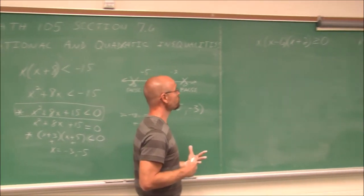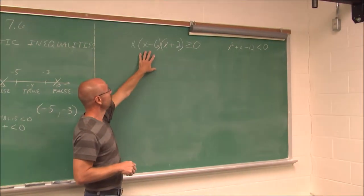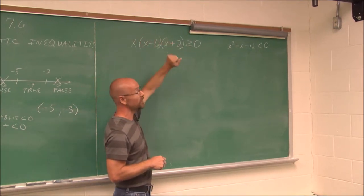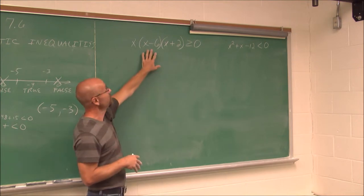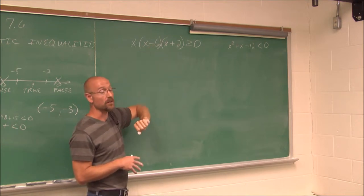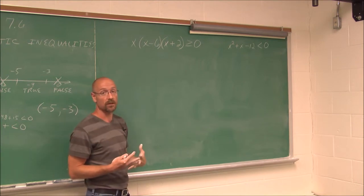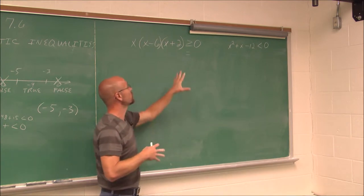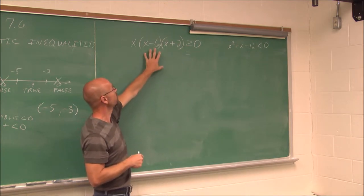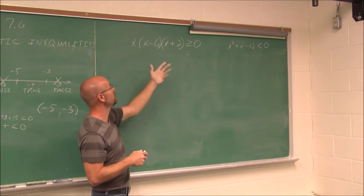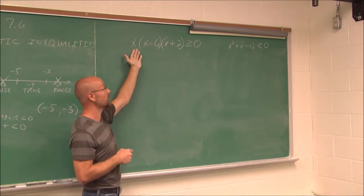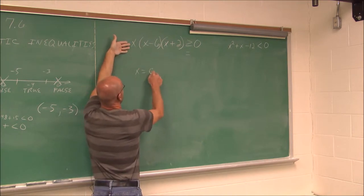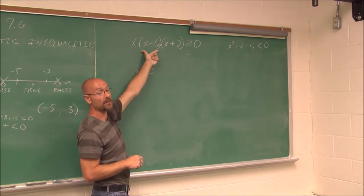Let's look at another example. Here we have something of even higher degree than a quadratic — we have an x term times an x term times an x term, so it's x cubed. But fortunately for us, it's already factored. So we can find those critical values if we wrote this as a related equation — let's pretend it's equal to 0. The critical values that would make it equal to 0: if x equals 0, what value would make this factor 0? If x is positive 6.